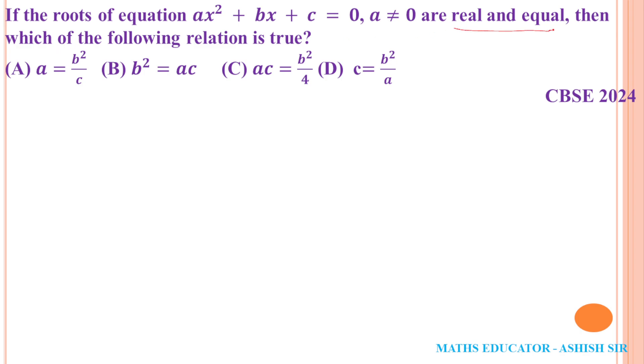What is the condition of the real and equal root? Real and equal root is b²-4ac=0. This is an option here, not here.